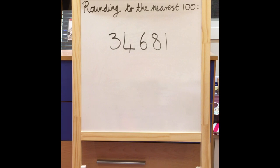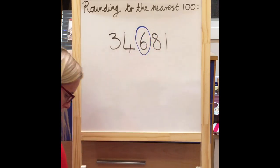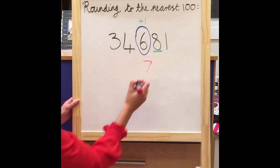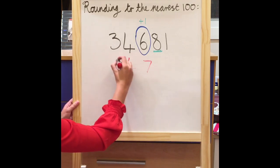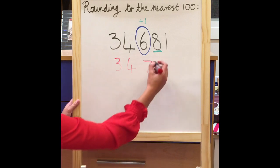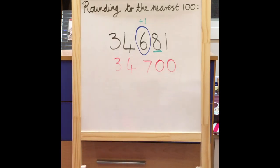Let's look at the number 34,681. No matter how big the number, the same principle applies. Because I'm rounding to the nearest hundred I must circle my hundreds column. Circle the number, look next door — next door I have an eight. Five or greater add one more: because I've got an eight I've got to add one more, so my hundreds column has now become a seven. Numbers on the left stay the same — my four and three stay the same. Numbers on the right, zero is your name — so my eight and my one turn to zeros. So 34,681 to the nearest hundred is 34,700.